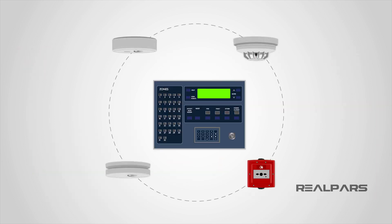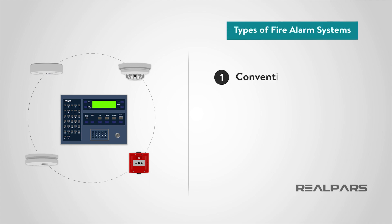Fire alarm systems can be broken down into four main types: conventional, addressable, intelligent fire systems, and wireless systems. Let's spend some time considering each.